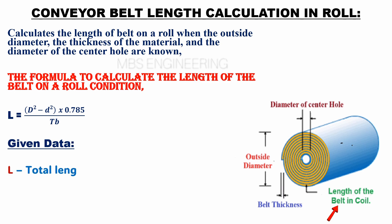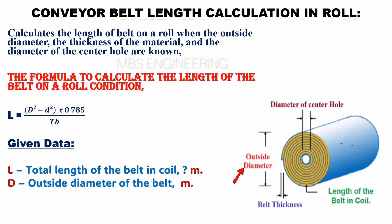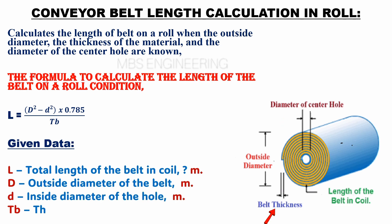L is the total length of the belt in coil, in meters — we need to calculate L. Capital D is the outside diameter of the belt in meters. Small d is the inside diameter of the hole in meters. Tb is the thickness of the belt in meters.